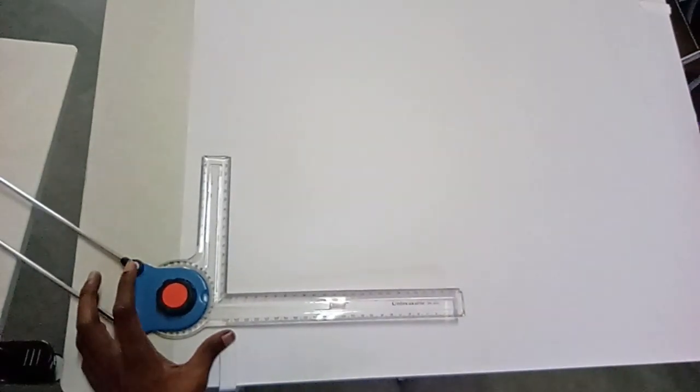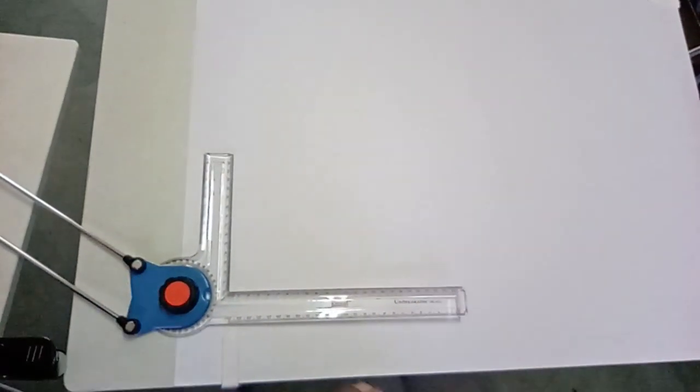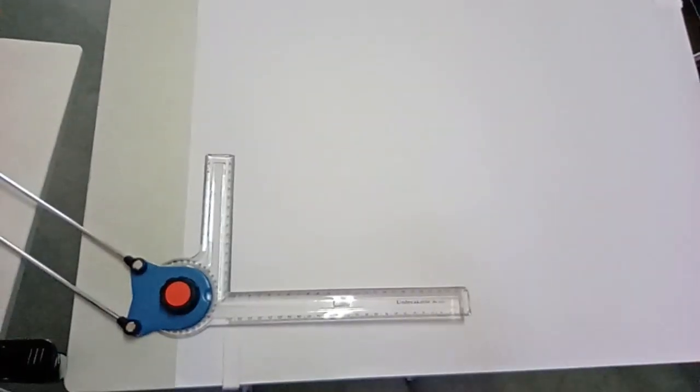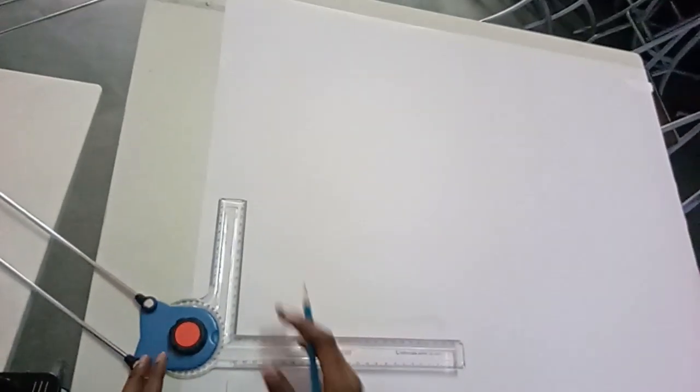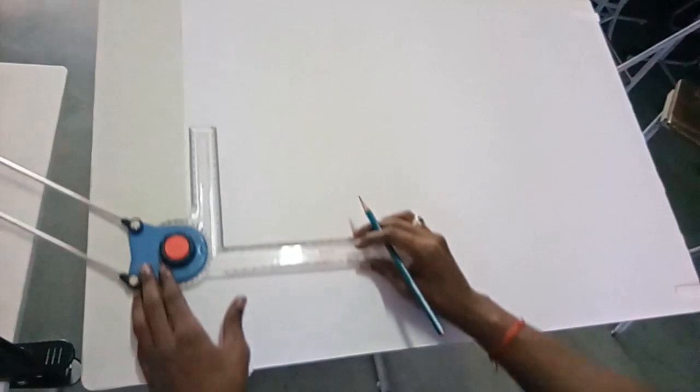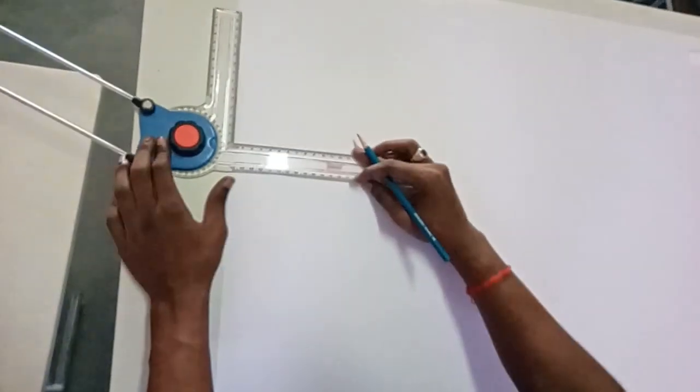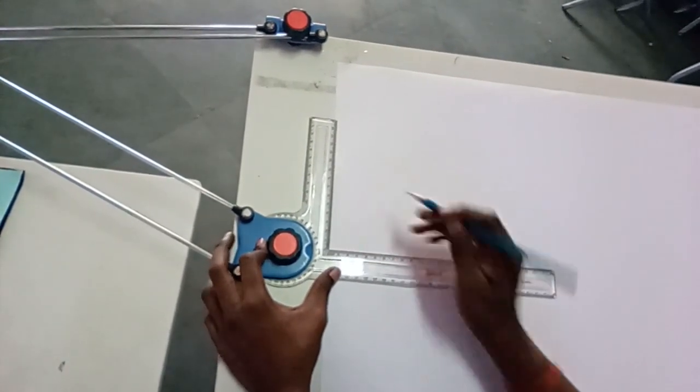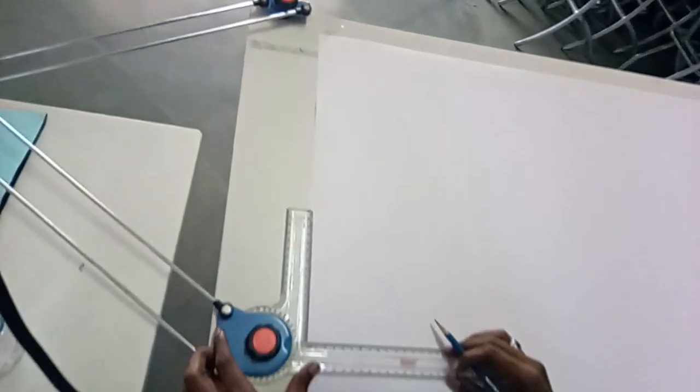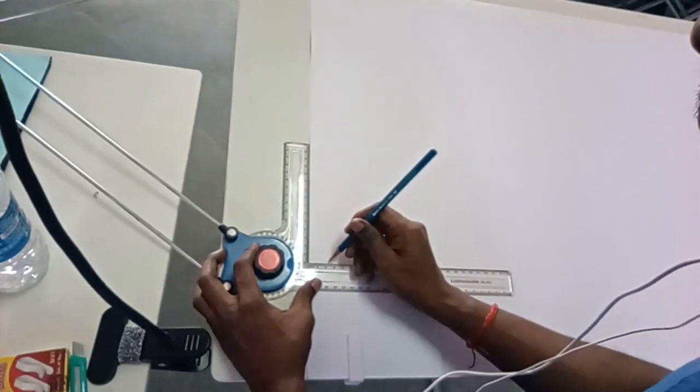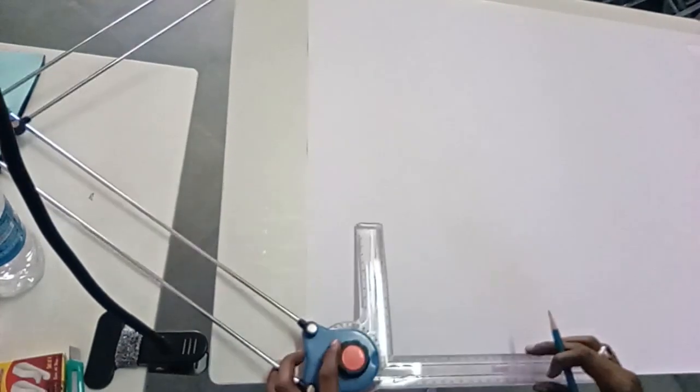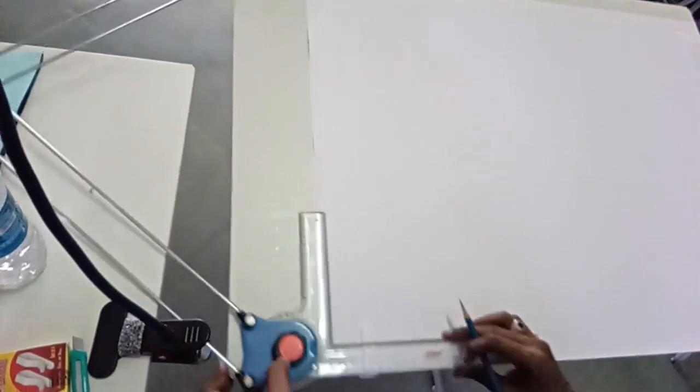Welcome to the next video on engineering drawing. In this particular session, we'll be learning how to make the borderline and the title block. We have a rule: from the left edge it should be 20mm. You can pull your drafter up and mark 20mm, then again here 20mm, then at the edge.